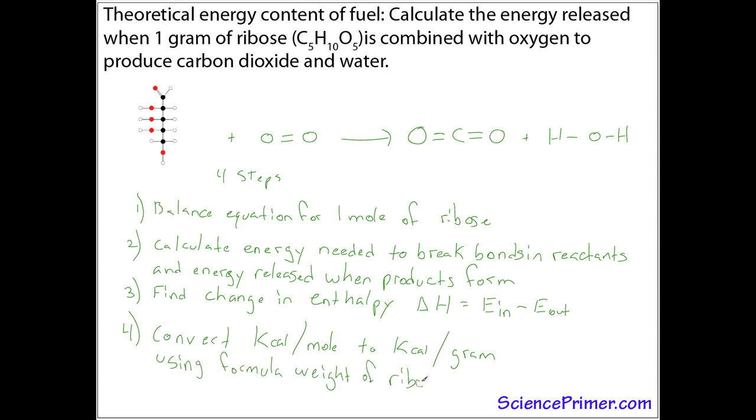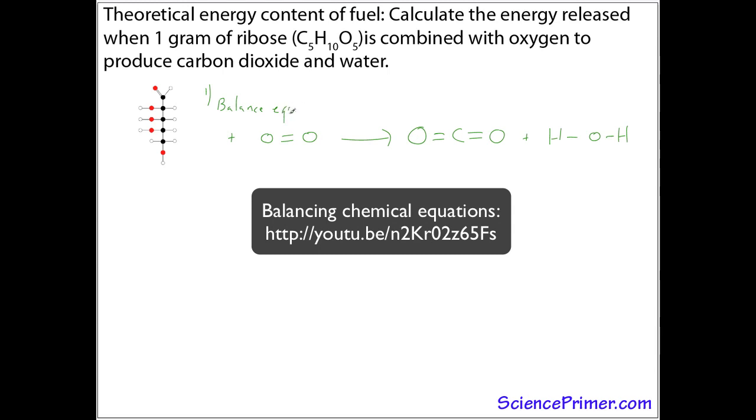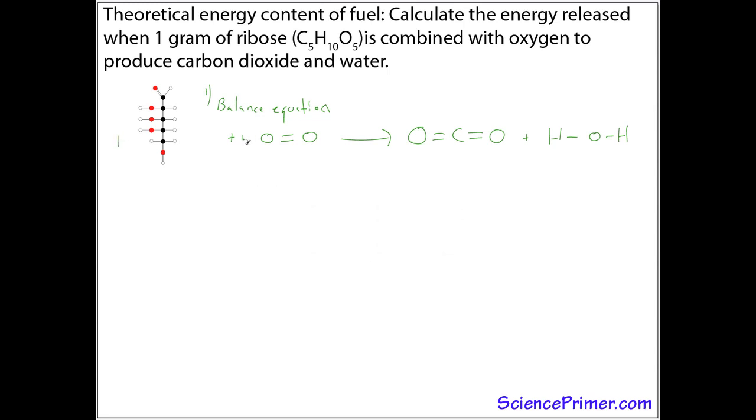So with step one, we'll balance the equation. I'm not going to go through this in this video. There is another video on how to balance chemical equations. You can take a look at if you need help doing this step. So quickly, one ribose combines with five oxygens to produce five CO2s and five waters.